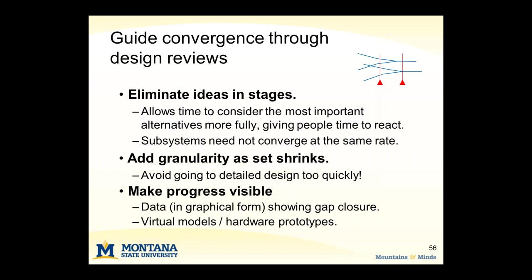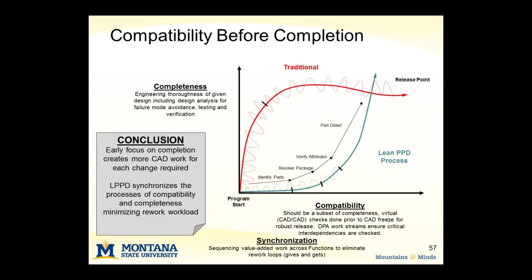If you can make your progress visible, that's really helpful. As you evaluate alternatives in your set, try to make sure that you have compatibility. Ensure compatibility before you worry about getting the design too complete, because if you spend a lot of time detailing out a design only to find out later that it's not compatible with someone else, you're going to get yourself into another loopback and producing a lot of waste. Focus in on compatibility in those earlier phases so that when you get down to detailed design and move towards release, you have a much higher degree of confidence that the alternative is going to work.